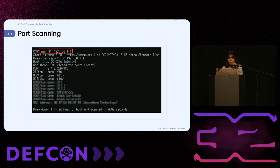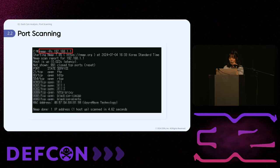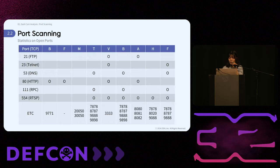The second step in the analysis process is port scanning. Using the Nmap tool, we can identify open ports on the dashcam, analyze services, and discover potential security vulnerabilities. For instance, if port 21 is open, we might attempt an FTP connection. Similarly, if port 80 is open, it suggests the presence of a web service. Here are the statistics for open ports on the analyzed devices.